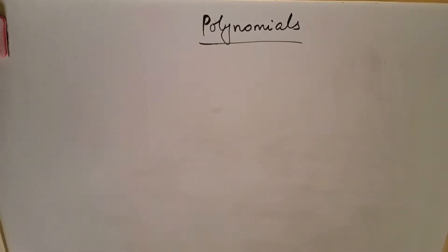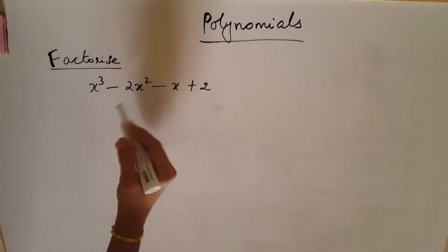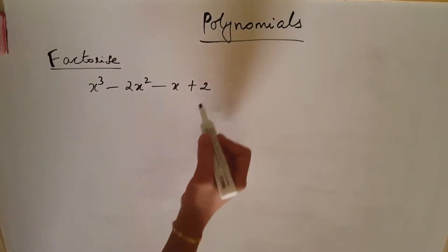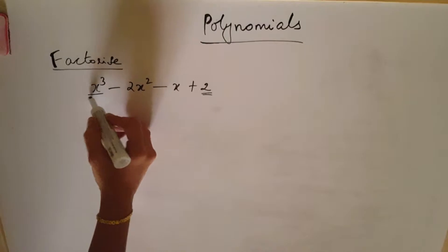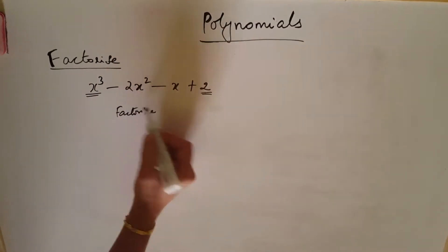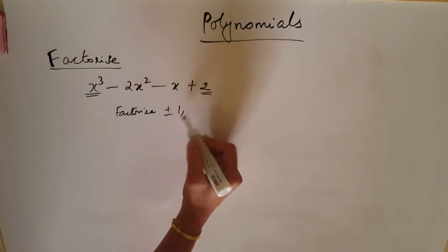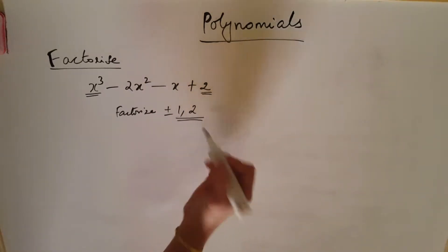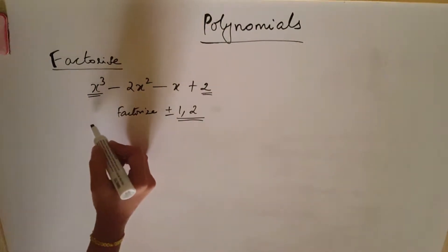Today we are going to learn about polynomials. In this question x cubed minus 2x squared minus x plus 2. The constant term is 2, so the factors to try are plus or minus 1. So we will see 2 methods today.